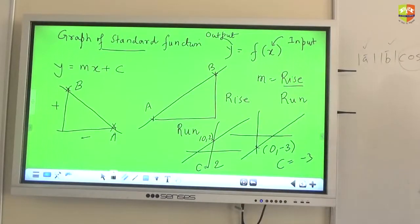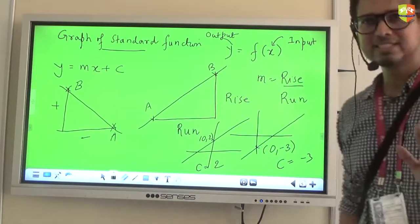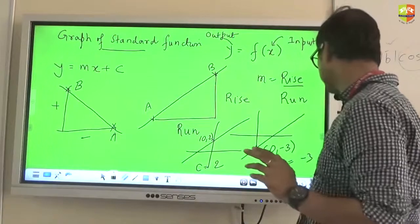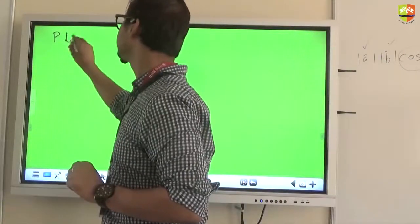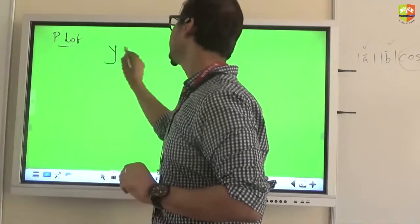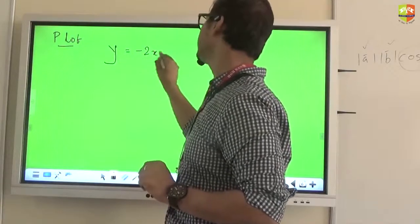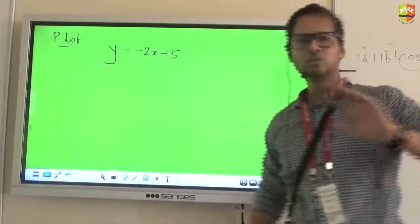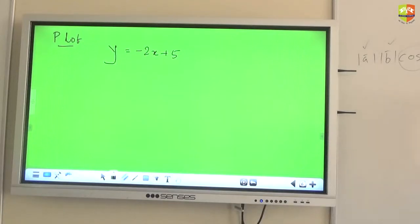Is that fine? So everybody sitting here can draw the equation, can draw the function, which is a line. If I give you the m and C value, you will be able to plot it roughly. Yes or no? Okay. Just a small exercise we will do on that. Plot y is equal to negative 2x plus 5. I know all of you know that, but just for knowing that everybody is on the same page, just draw this.